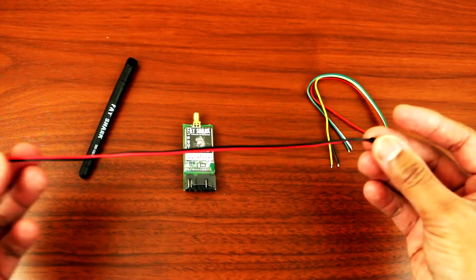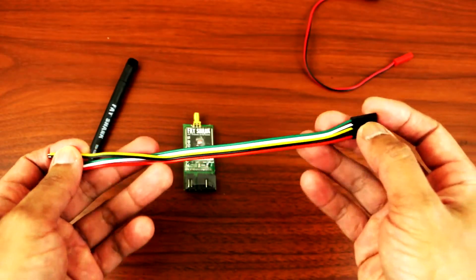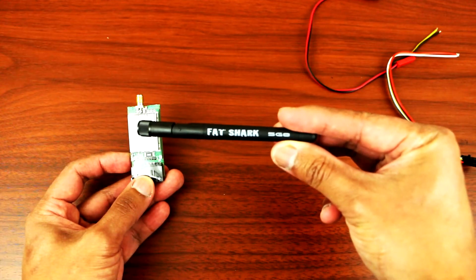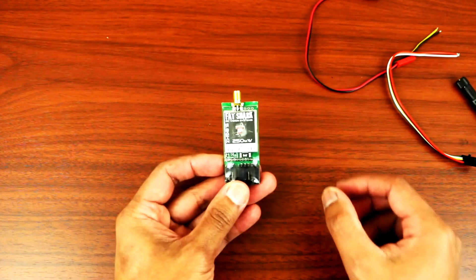Okay, so let's unbox the FatShark transmitter. It comes with a wire for the power source, video and audio wires, antenna with the FatShark name on there, and then you have the transmitter itself.